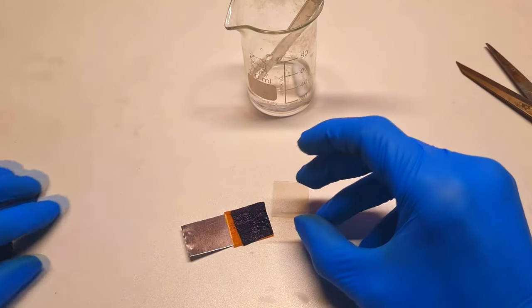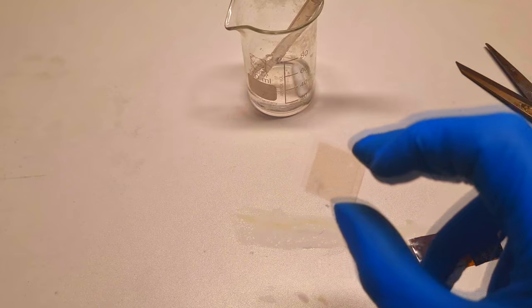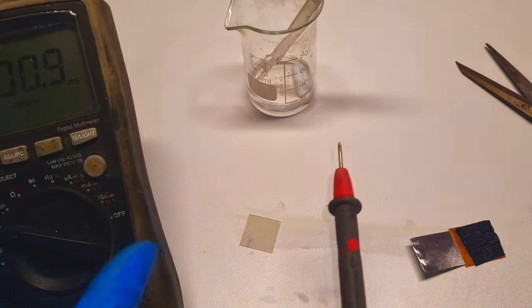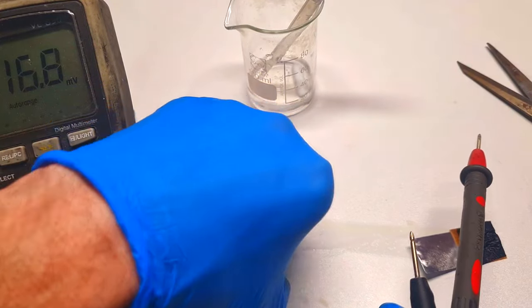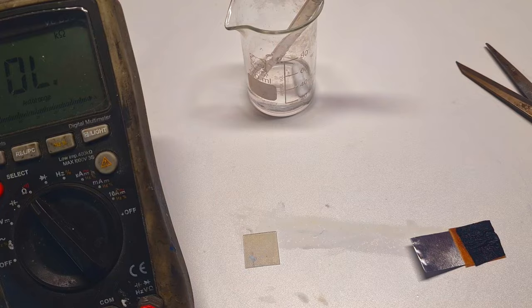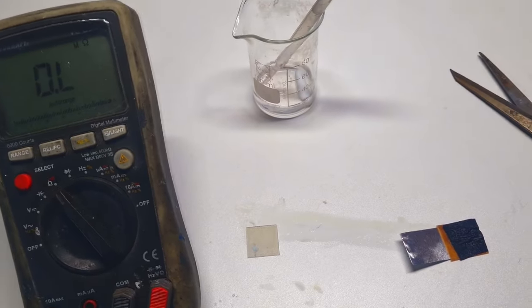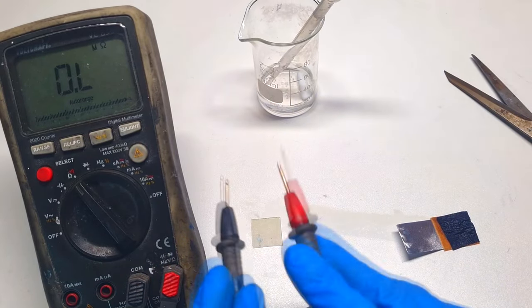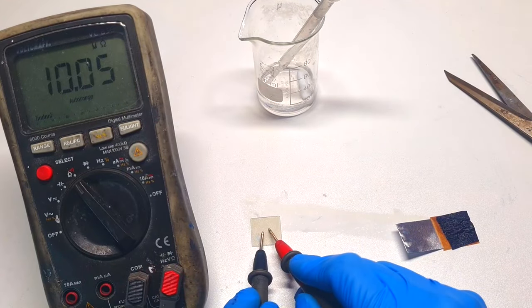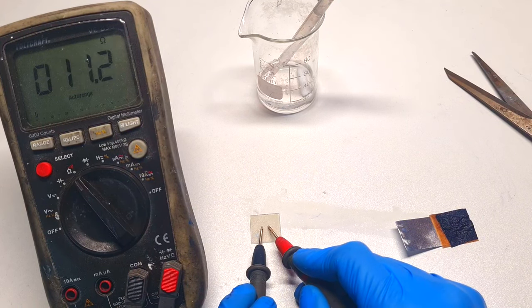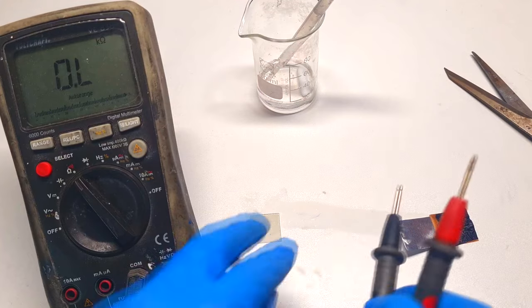And on the top I will put this indium tin oxide conductive glass. But first of all I need to make sure which side is the conductive side. 11 ohms, so this will be the conductive side.